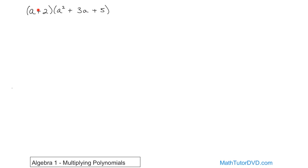Then you move over to the 2, distribute it here, distribute it here, distribute it here. That's the blueprint for how you multiply any two polynomials together. Every term on the outside gets multiplied times every term in the second polynomial; then you move to the next term and do exactly the same thing, until you've multiplied everything together and then simplify.